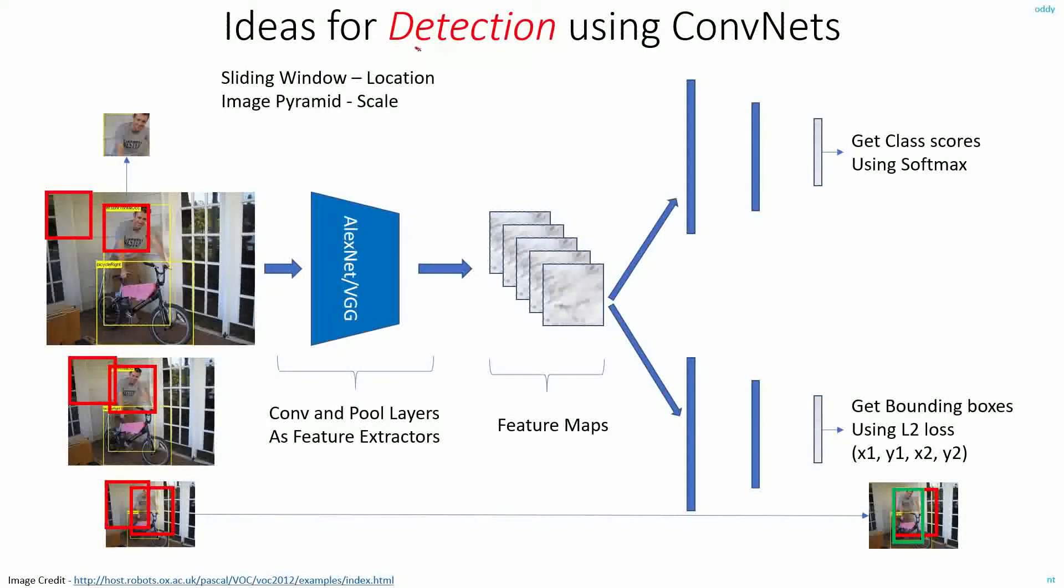This was my initial idea for doing object detection using convolutional neural networks. I'll take images of different scales to identify objects of different sizes, and I will also be using the sliding window technique to identify objects at different locations within the image.